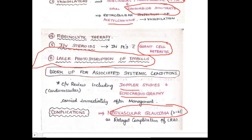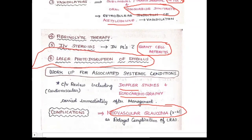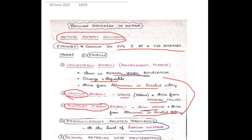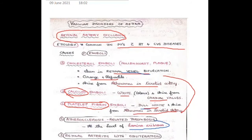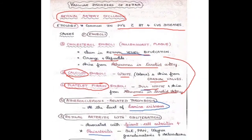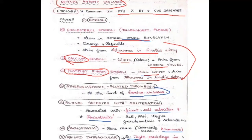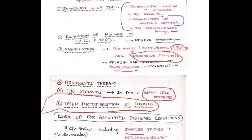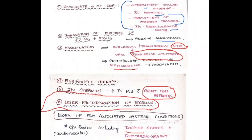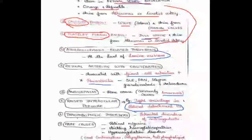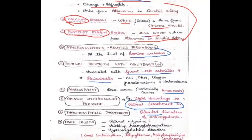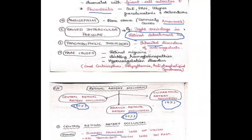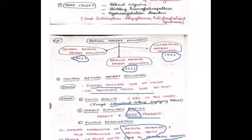In summary: the blood supply of the retina is from the central retinal artery, branch retinal arteries, and cilio-retinal artery. Etiology includes emboli (cholesterol, calcium, platelet-fibrin), atherosclerosis-related thrombosis, arteritis (giant cell, peri-arteritis), angiospasm, raised intraocular pressure from tight circulate, thrombophilic disorders, and rare causes like migraine, sickling, and hemoglobinopathies.